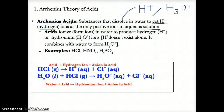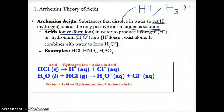The key point of the Arrhenius definition is that acids dissolve in water to give out H+, which is hydrogen, or H3O+, which are hydronium ions, as the only positive ions in aqueous solution. Arrhenius acids ionize or break apart to form ions in water that produce either H+ or H3O+ ions.